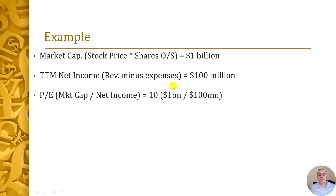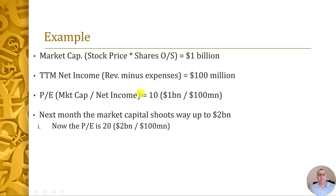So an investor is willing to pay $10 for one dollar of net income. Let's say next month the market cap shoots way up to $2 billion — the stock price doubles. Now the PE is 20. Now you have to pay twice as much as you did last month for the stock, so it appears more overvalued than before. Notice the denominator did not change because the company's earnings haven't updated — the earnings update every quarter. The numerator changes every trading day because the stock price goes up and down.